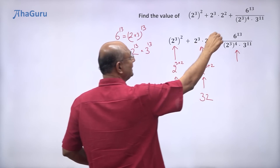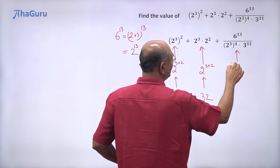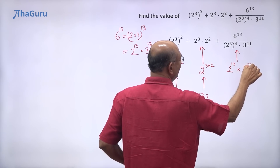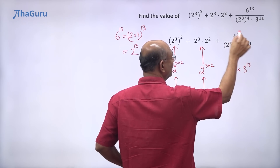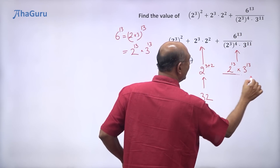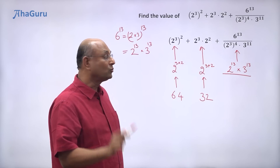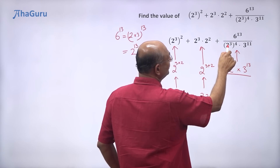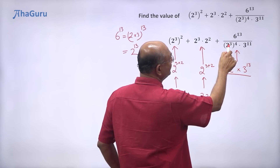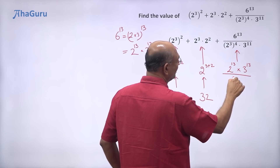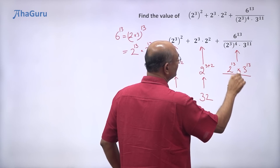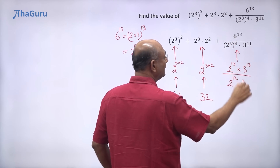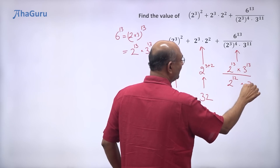So in the numerator we have 2 power 13 into 3 power 13. In the denominator we have 2 to the power of 3, whole power 4, which is 2 to the power of 3 into 4, that is 2 to the power of 12, multiplied by 3 to the power of 11.